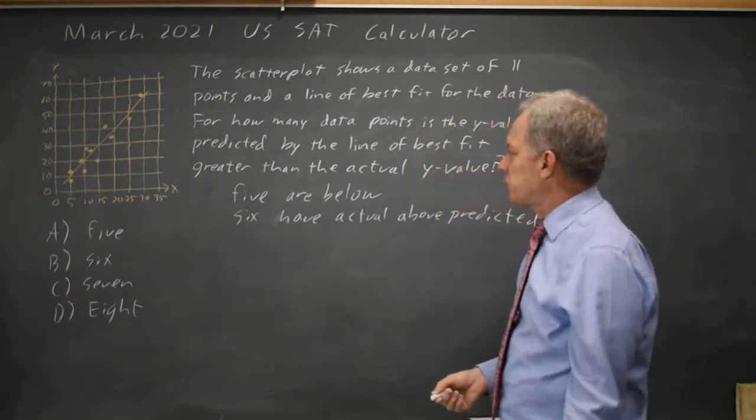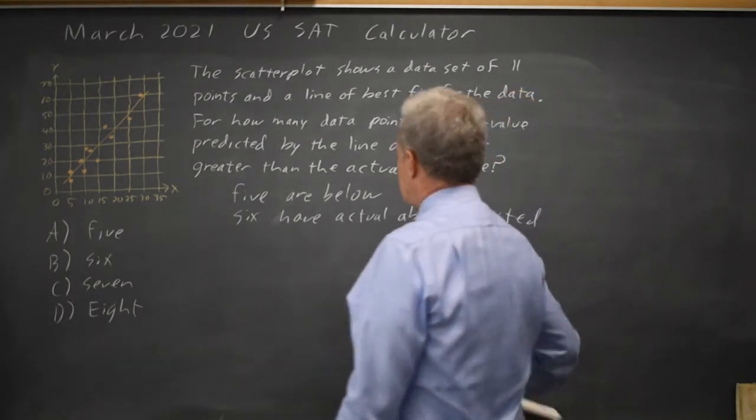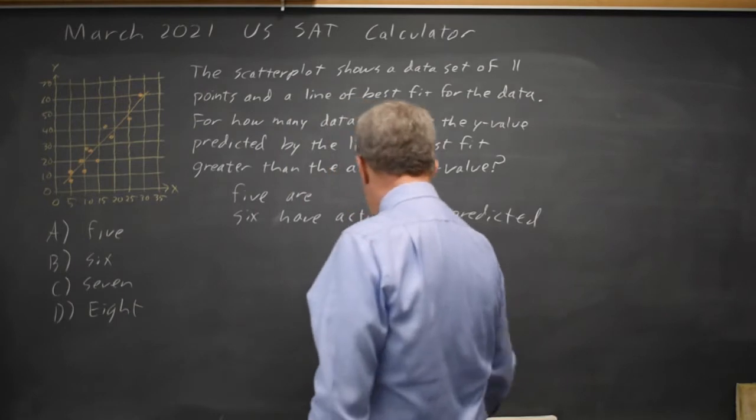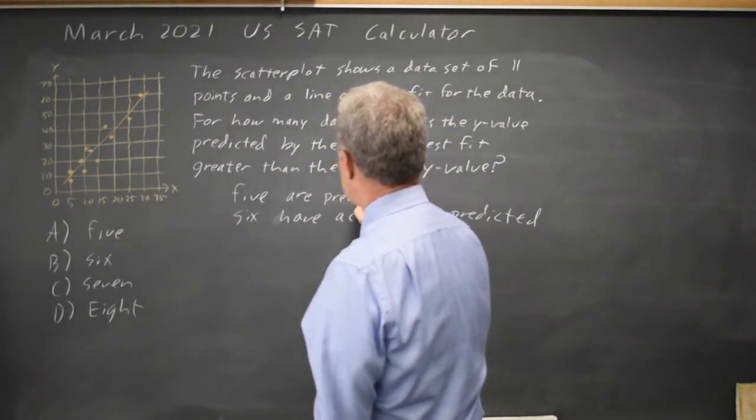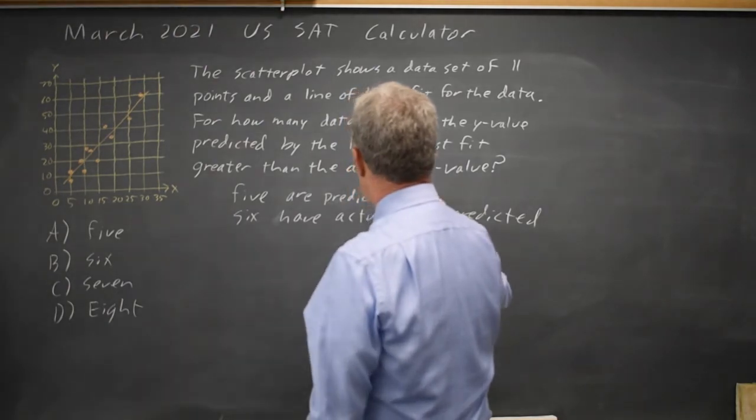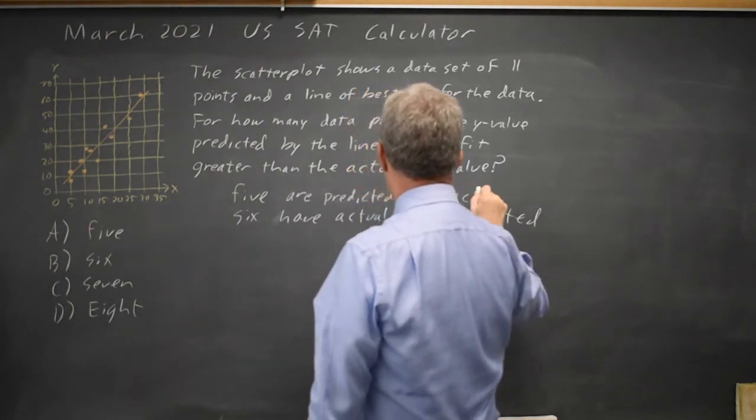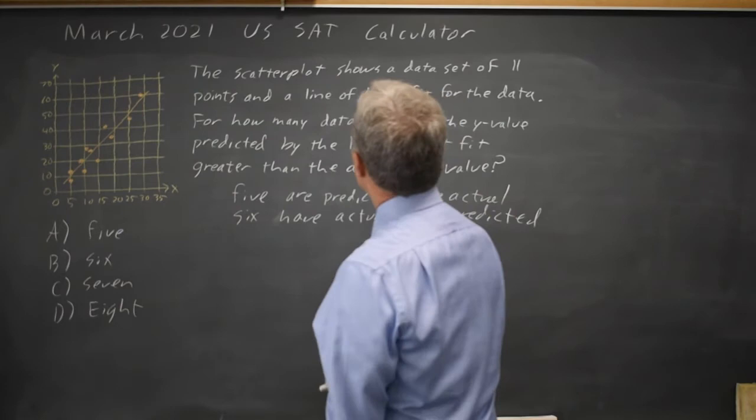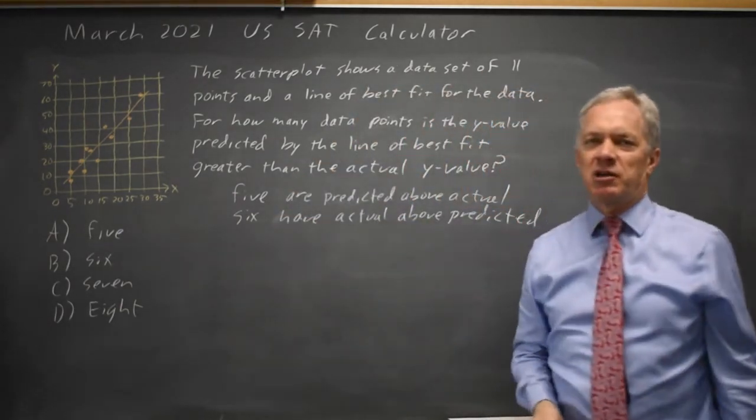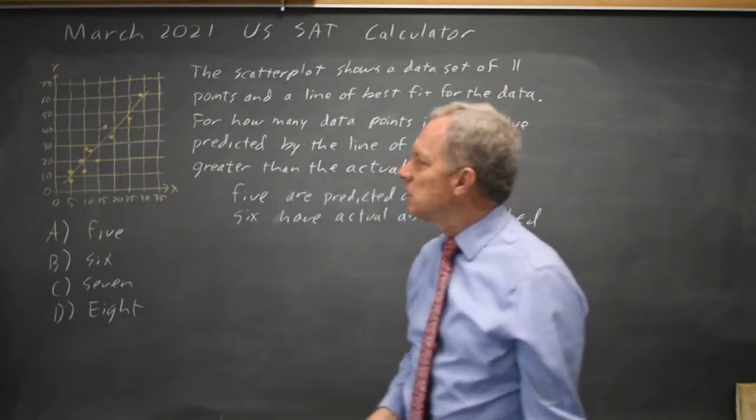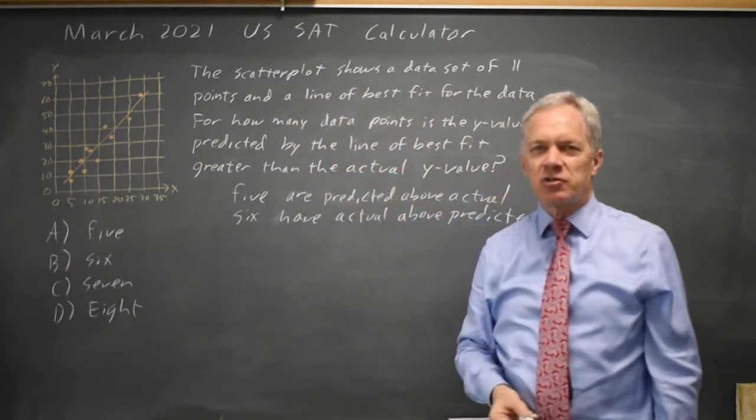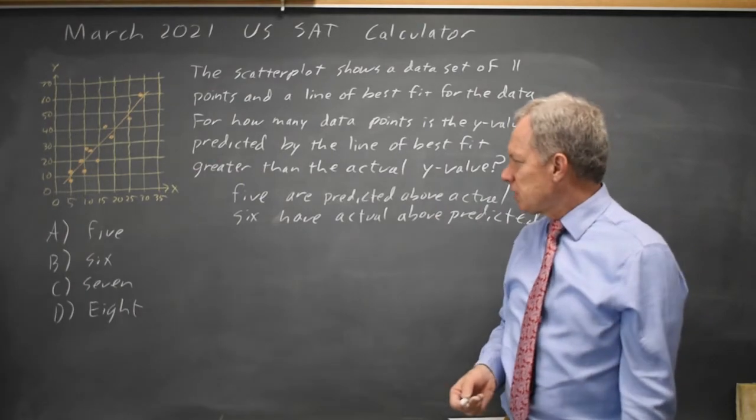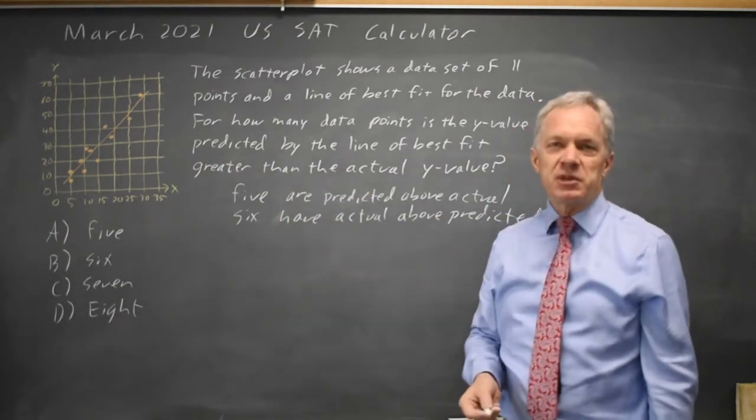6 have actual above predicted and 5, I should be specific so I don't misread that, 5 are predicted above actual. And that total is 11 so I know I'm not missing a point. Sometimes I will miss a point that's right on top of the line, especially if it's at an intersection on the grid or something like that.